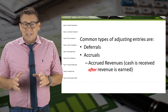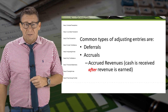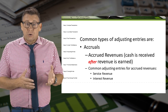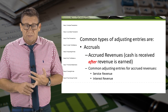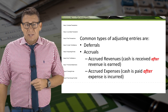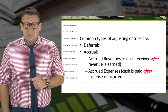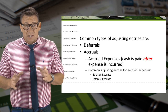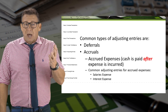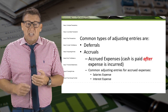An example of an accrual is accrued revenues. This means that cash is received after revenue is earned. Some common examples of adjusting entries for accrued revenues are service revenue and interest revenue. Another type of accrual is accrued expenses, meaning cash is paid after the expense is incurred. Companies tend to have a lot of accrued expenses as this is the most common type. Common examples include salary expense and interest expense.